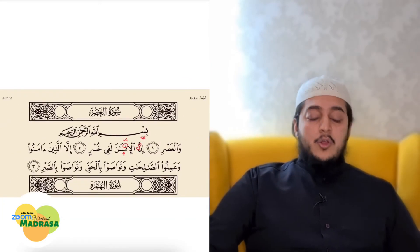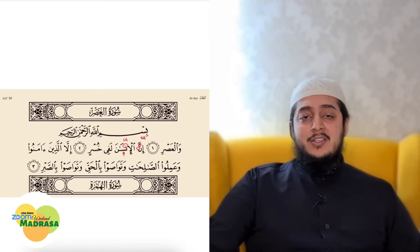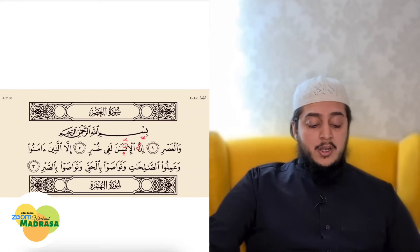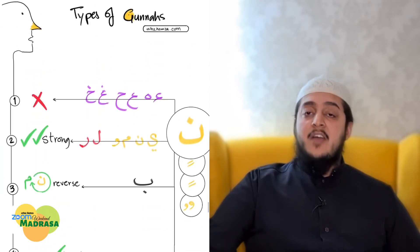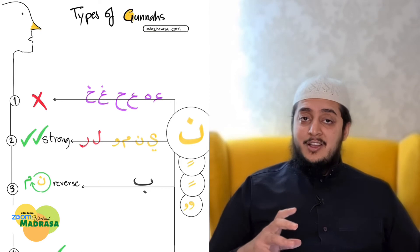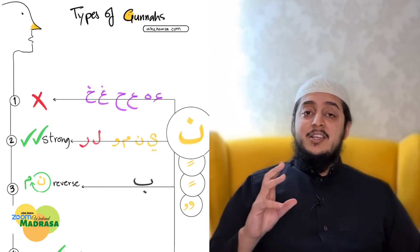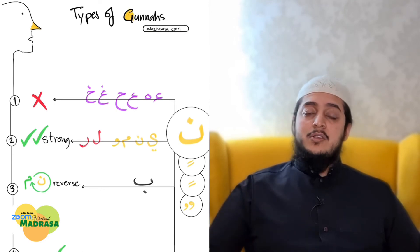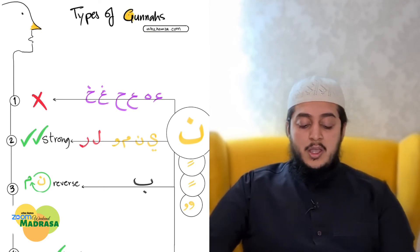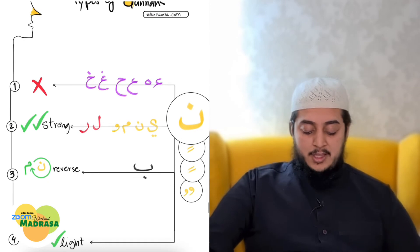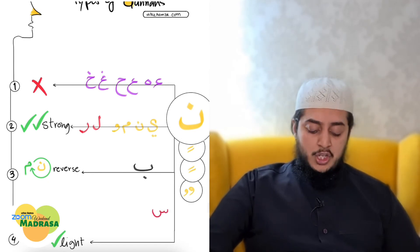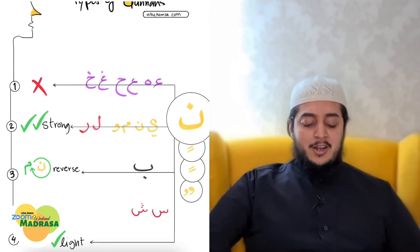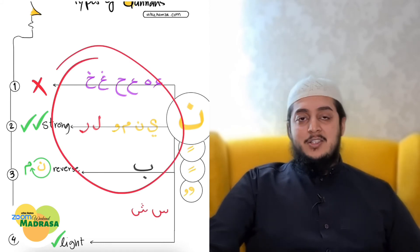Light ghunna, boys and girls - light ghunna. "Insaan" - compare it to the strong ghunna. So there we go, we learned something new: a light ghunna. Light ghunna occurs when we have any letter apart from the letters that we have learned earlier. If any one of these letters comes after noon and tanween, we are going to do a light ghunna. The letters seen, sheen, and all the other letters apart from the ones listed - I will add these letters inshallah and then you can print it out.